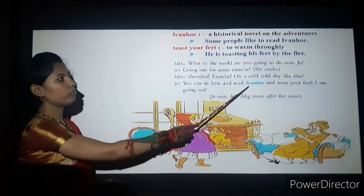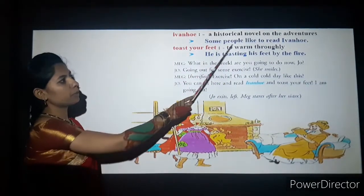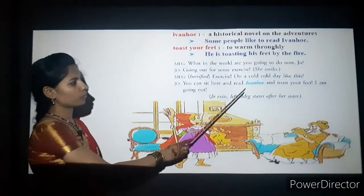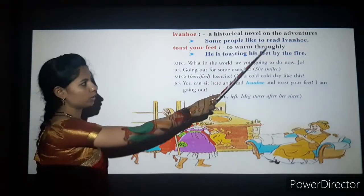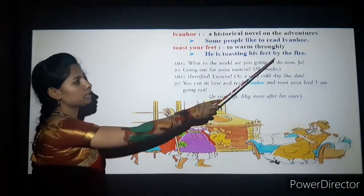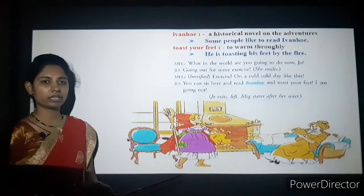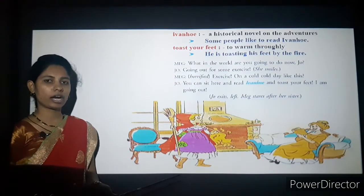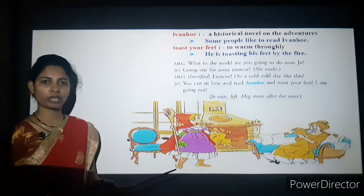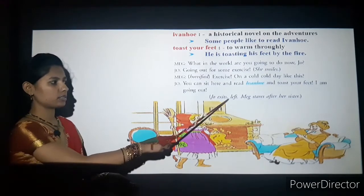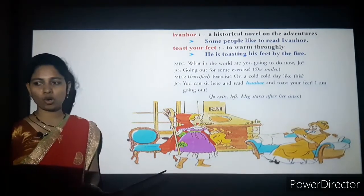Jo says: 'You can sit here and read Ivanhoe and toast your feet. I am going out.' Ivanhoe means a historical novel on adventures. 'Toast your feet' means to warm them thoroughly by the fire. Jo told Meg: 'You sit here, read your historical book, warm your feet — I am going out now.' Jo exits left. Meg stares after her sister.